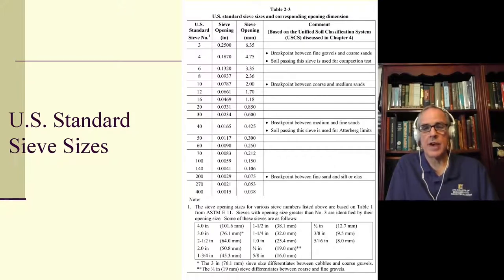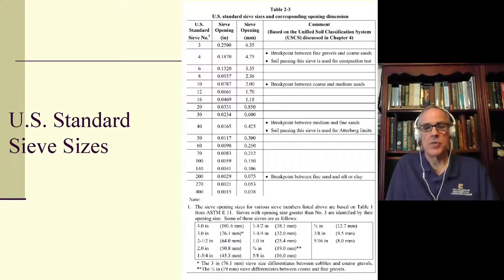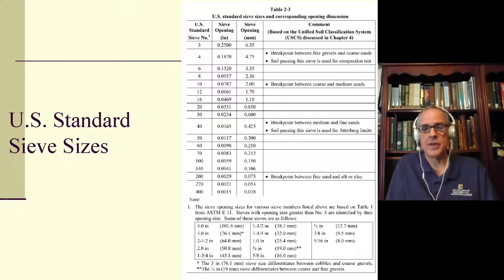There are some important breakpoints. The number 4 is an important breakpoint — it is the breakpoint between fine gravels and coarse sands, which is important in the unified classification. The number 10 is the breakpoint between coarse and medium sands. The number 40 is the breakpoint between medium and fine sands, and all soils used in the Atterberg test are passed through the number 40. The number 200 sieve is the breakpoint between fine sand and silt or clay — probably the single most important breakpoint.